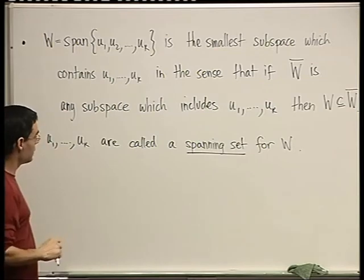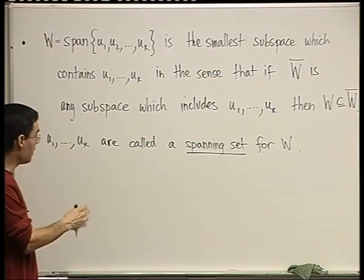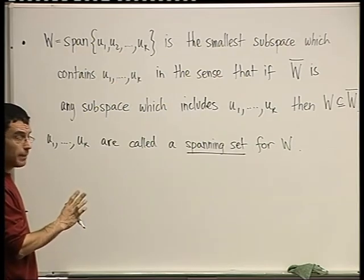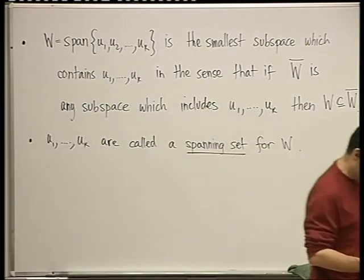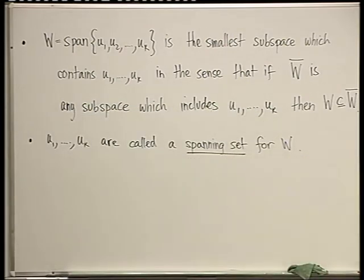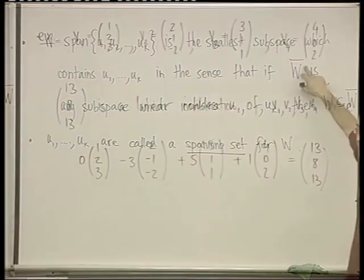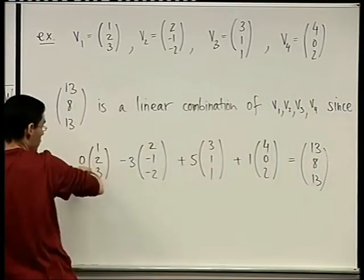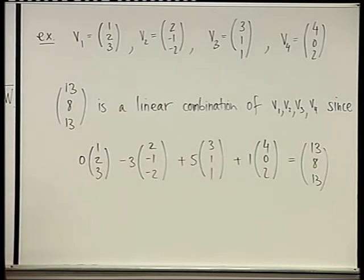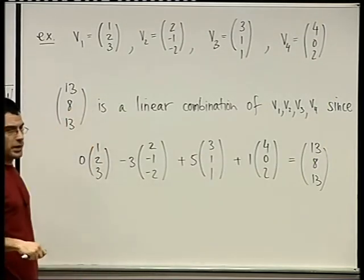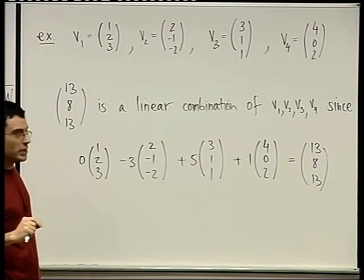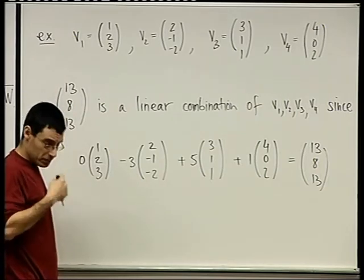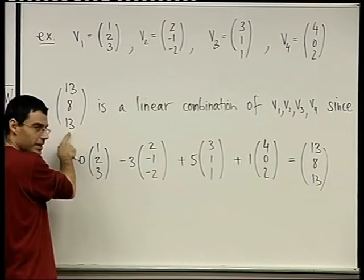Is it clear what a linear combination is, what a span is, and why it's a subspace? Let's go back to the example. We started with four vectors in R³ and showed that the specific vector (13, 8, 13) is a linear combination of the four.